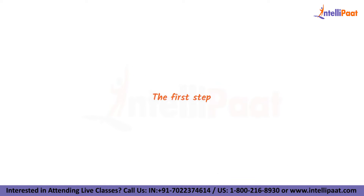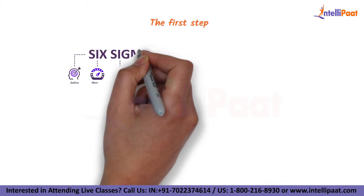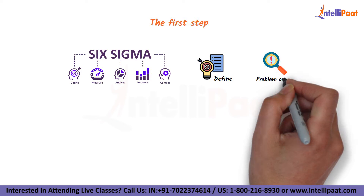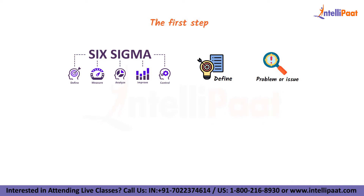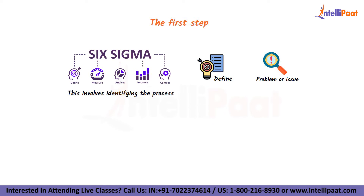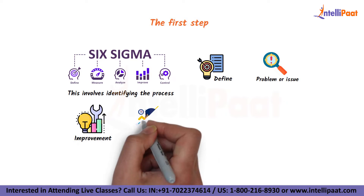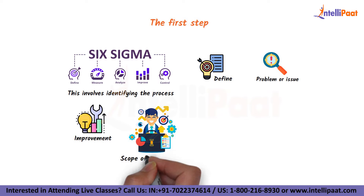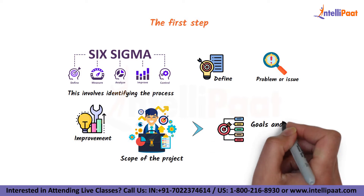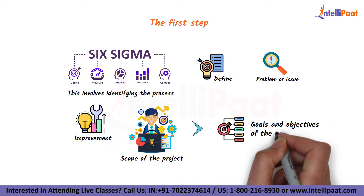The very first step in the Six Sigma process is to define the problem or issue that needs to be addressed. This involves identifying the process that needs improvement, determining the scope of the project, and defining the goals and objectives of the project.